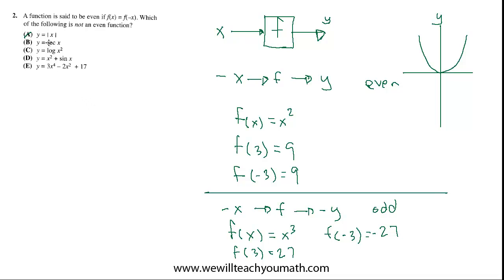y equals secant x. What is secant? Well, secant x is 1 over cosine x. And cosine turns out to be an even function. And sine turns out to be an odd function. So if cosine is an even function, 1 over an even function is still an even function. So secant plays just like cosine does. That is to say that it is an even function. So we eliminate that.